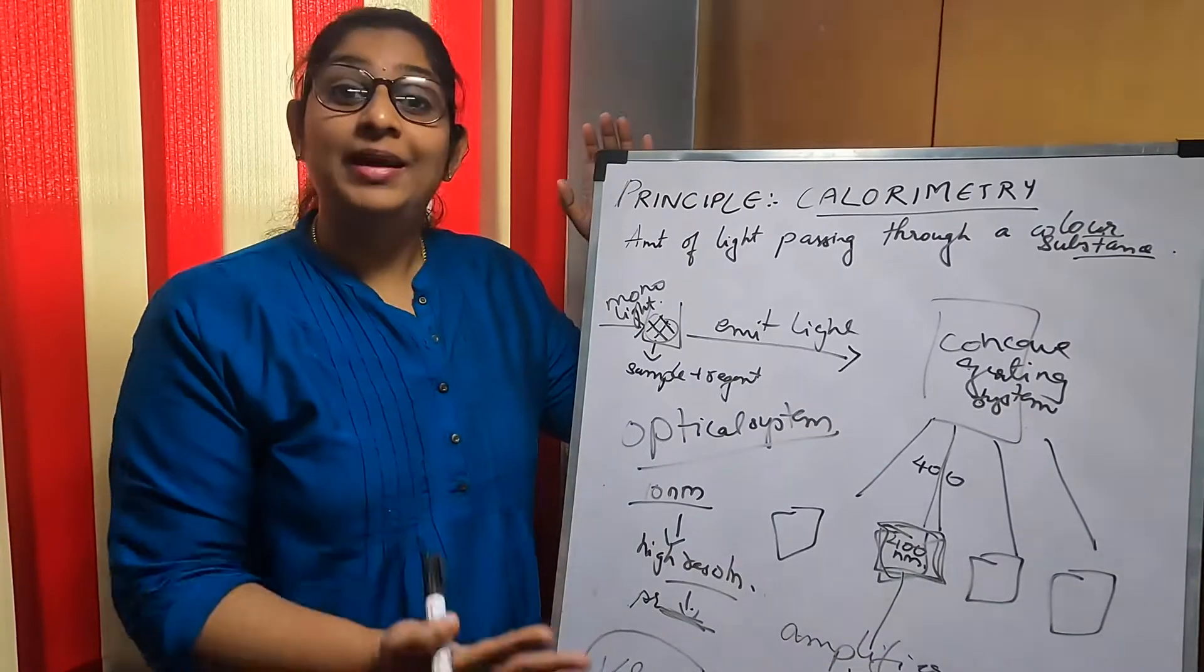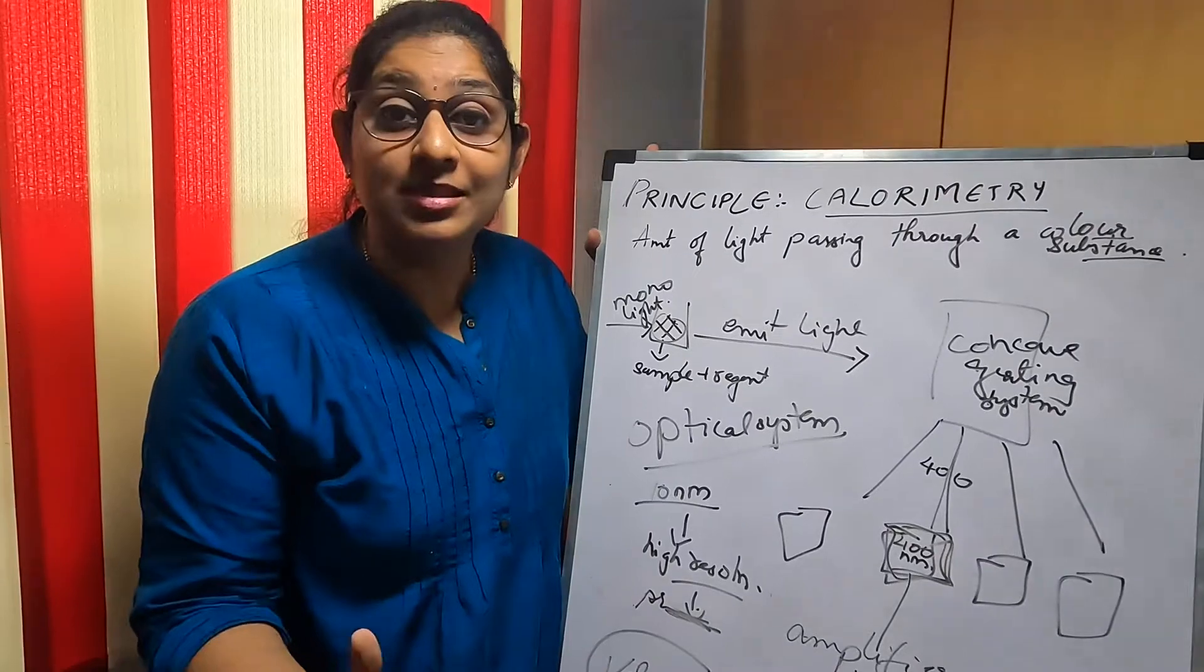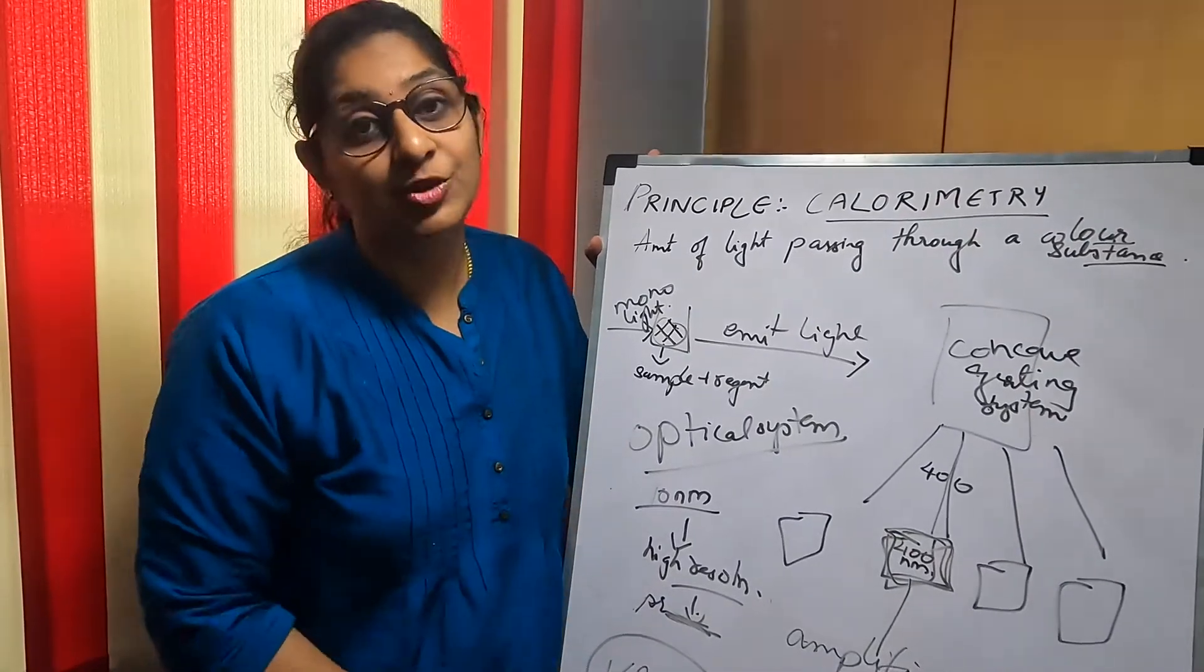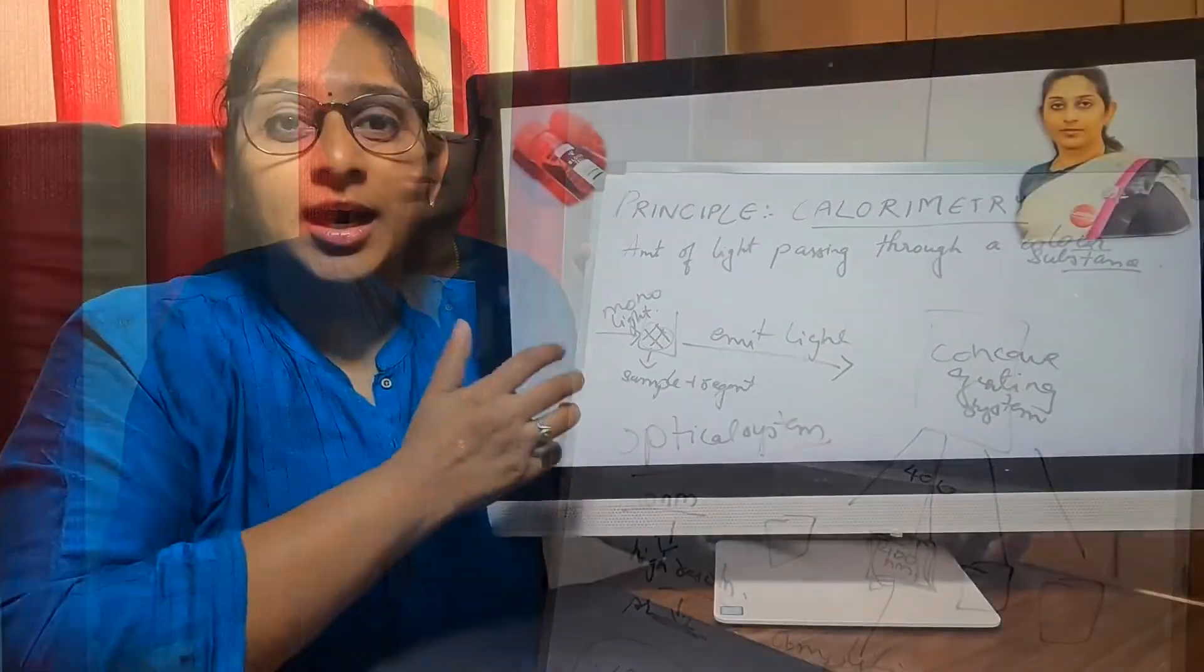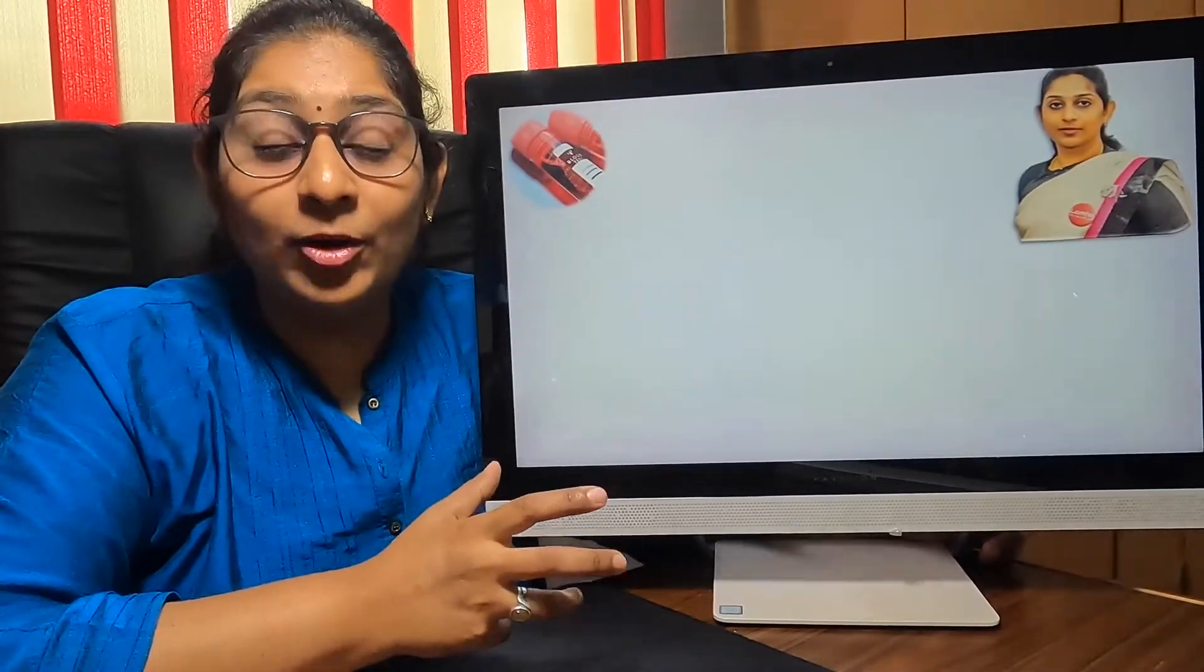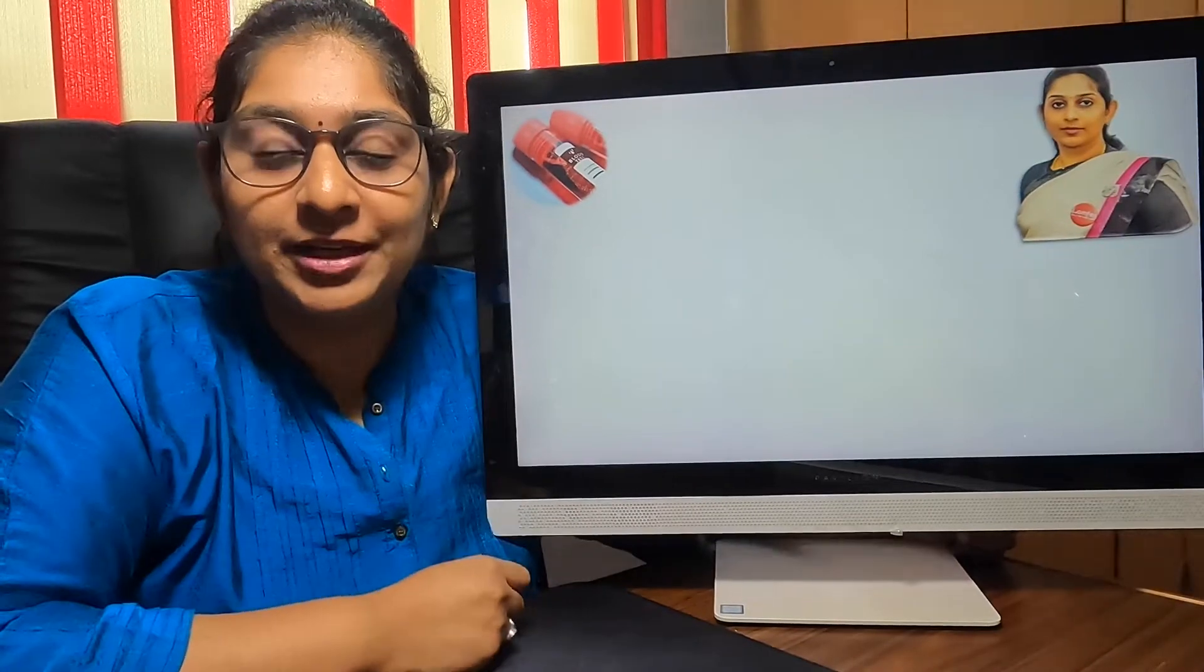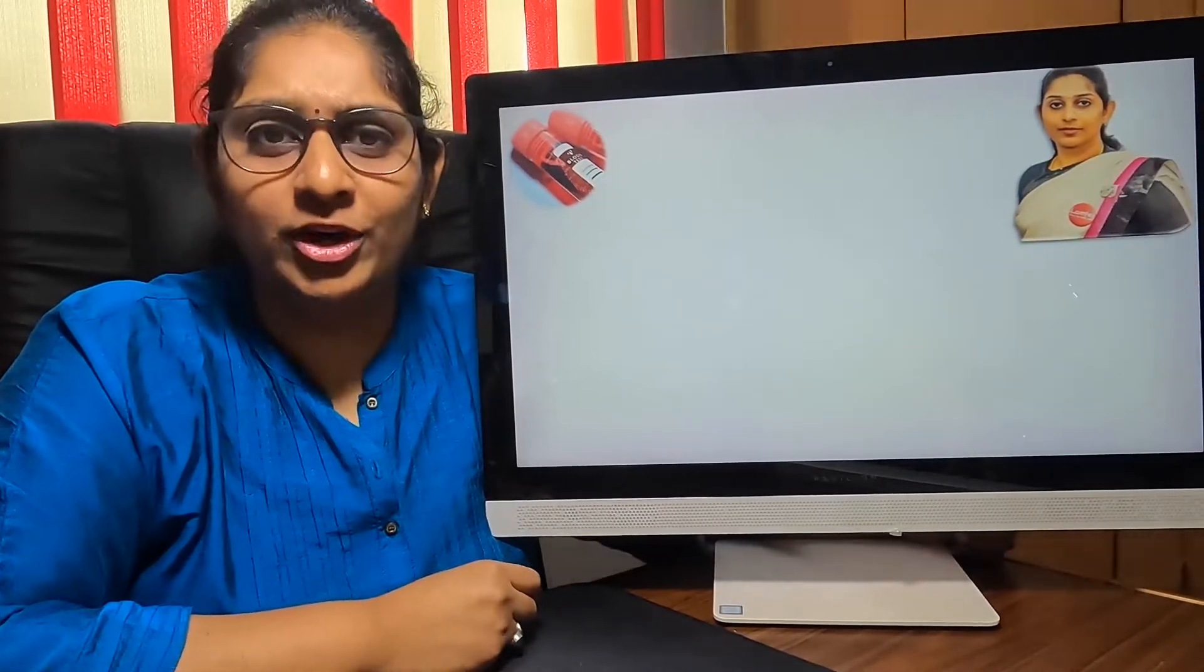This is the principle and working of the optical system in very simple terms for you to understand how an automated biochemistry system works. It feels very good to have some knowledge about the basic functions and how the principle of this machine works before choosing the machine for your laboratory.